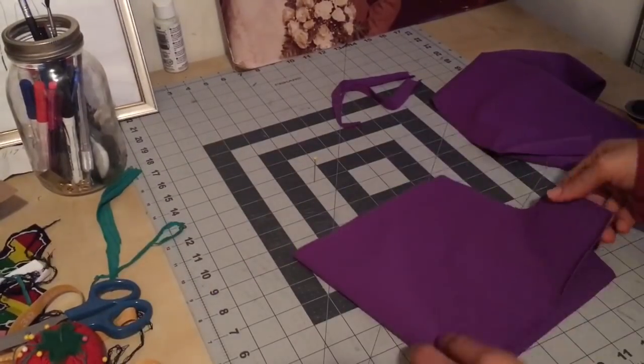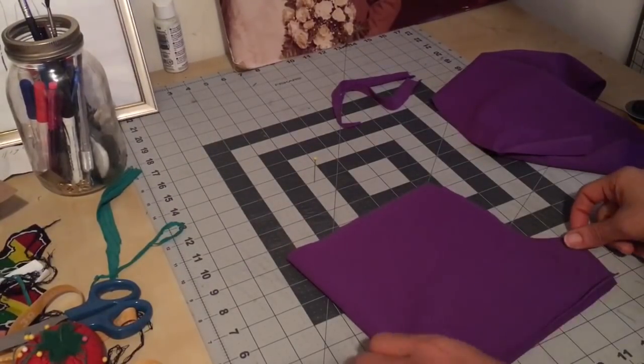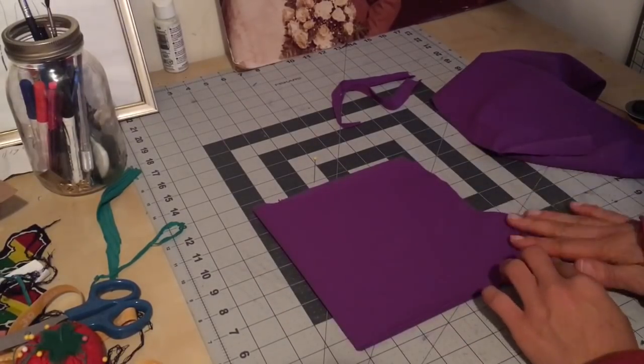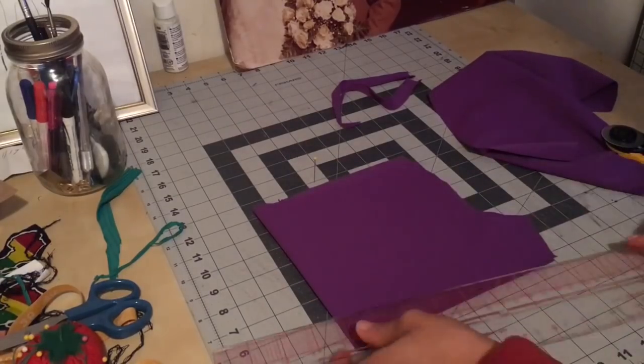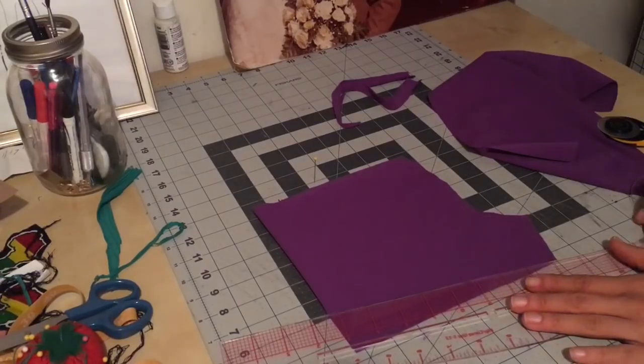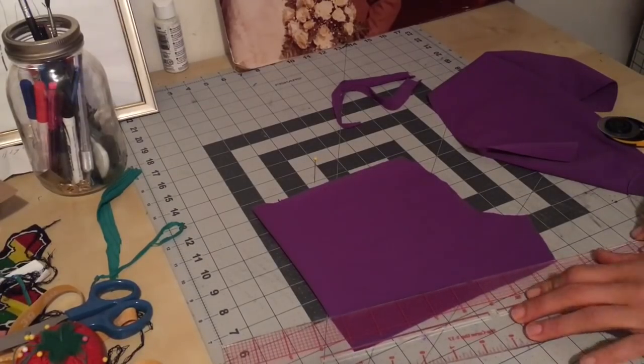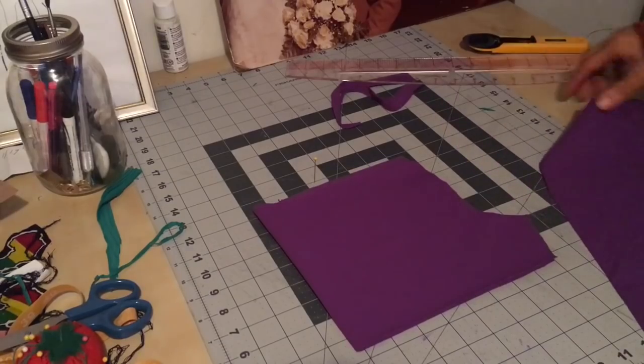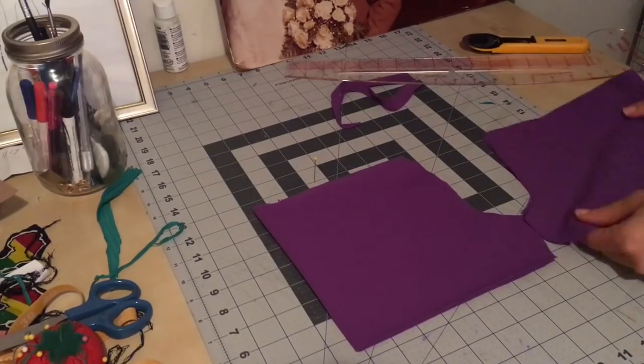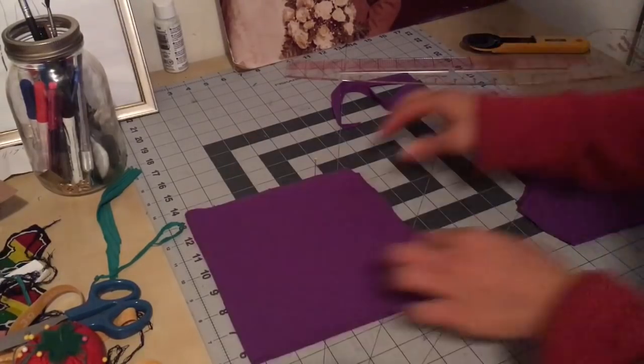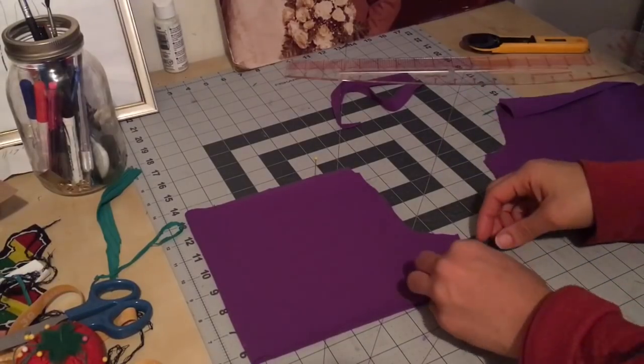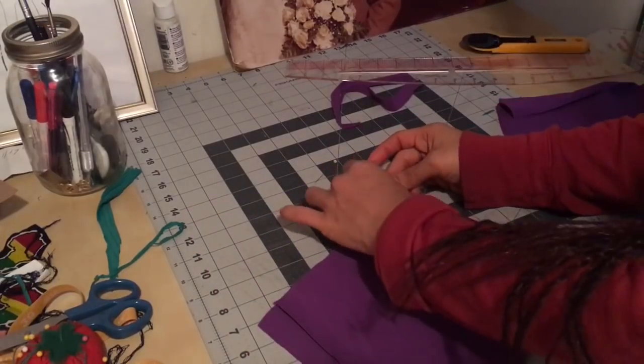Once you do that, you're going to flip right sides together. Now you can actually cut off to make it into the booty short, or you can just leave it like that and wear it as a pair of short shorts. But if you want booty shorts, I'll show you how to do that after you sew down the inside. So let's take this to the machine and sew that up.